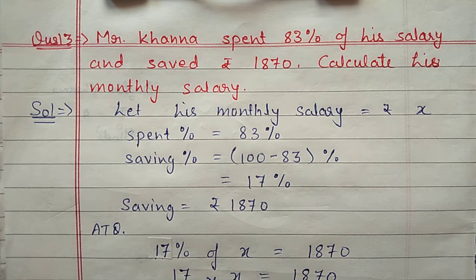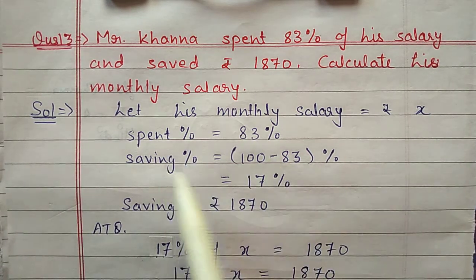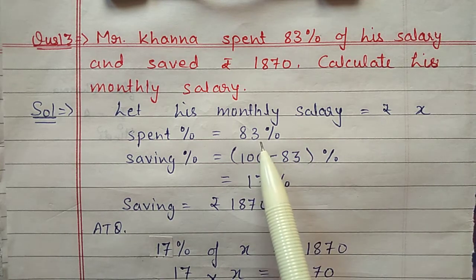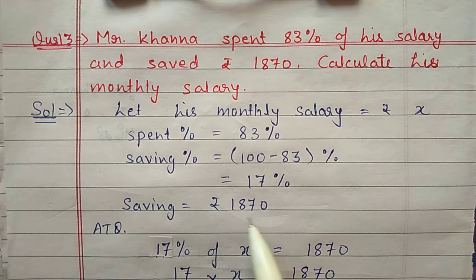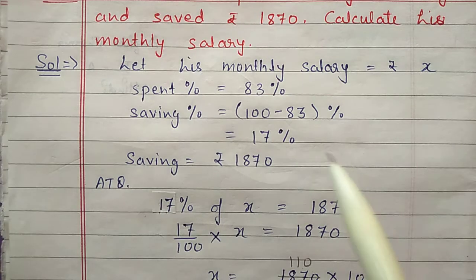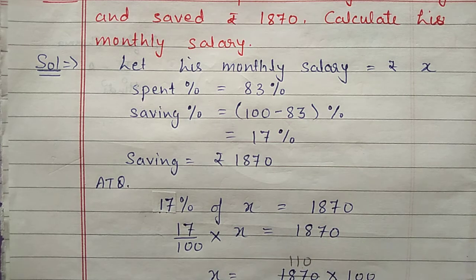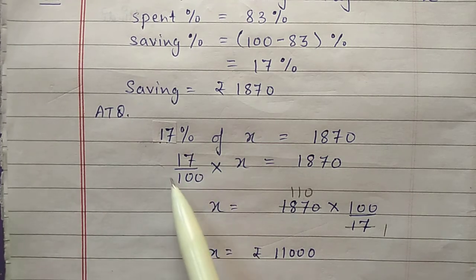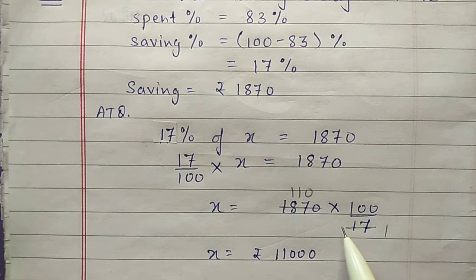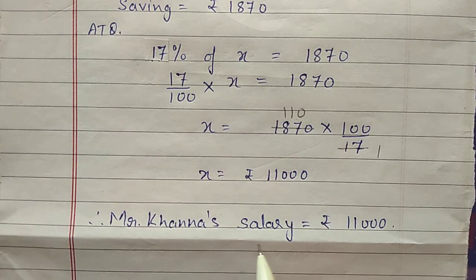Question number 13: Mr. Khanal spent 83 percent of his salary and saved rupees 1870 — calculate his monthly salary. Suppose his monthly salary is x rupees. He is spending 83 percent, so he is saving 17 percent (100 minus 83). Numerically the saving is 1870 rupees, so 17 percent of x equals 1870. Percentage symbol means divide by 100, so 17 by 100 into x equals 1870. Shift 17 by 100 to the other side — multiply and cancel — x equals 11,000. So Mr. Khanal's salary is 11,000 rupees.